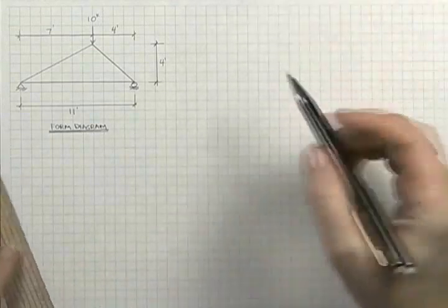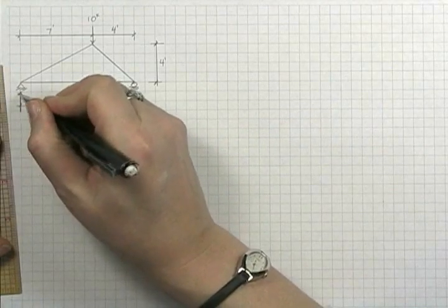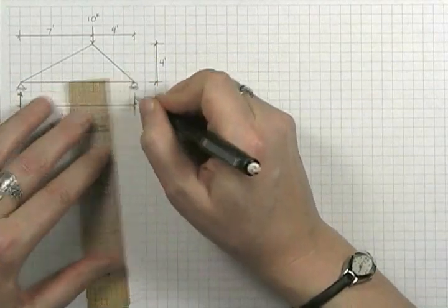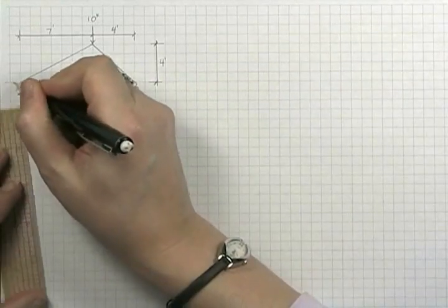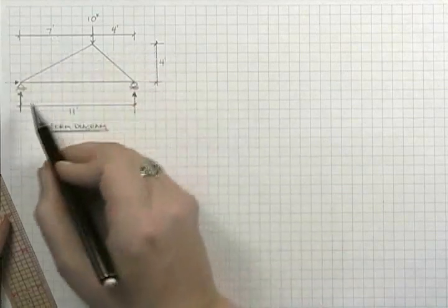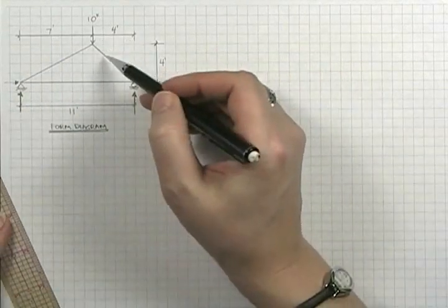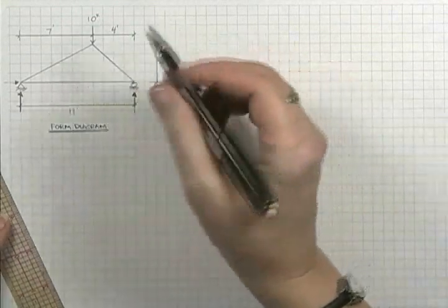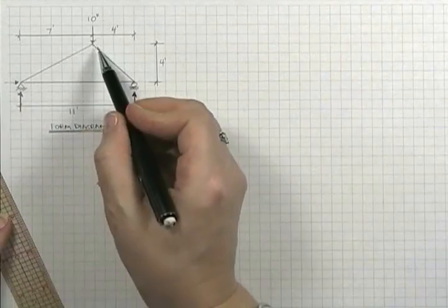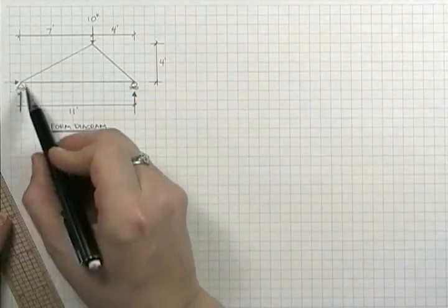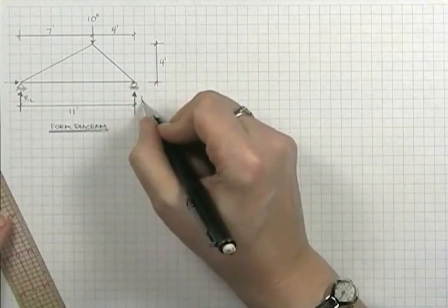So we begin by finding our reactions. We have a potential left and right hand reaction vertically, also potentially horizontally because on the left-hand side we have a pin connection, however there is no horizontally acting force on this truss, therefore there can be no horizontal reaction. However, if we did push horizontally on the truss, this is where it would occur. So the label is r left and r right.